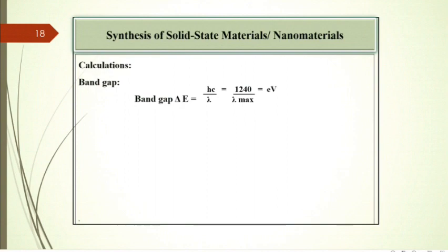Formula for the calculation of band gap is delta E equals Hc upon lambda, that is 1240 divided by lambda max electron volt.